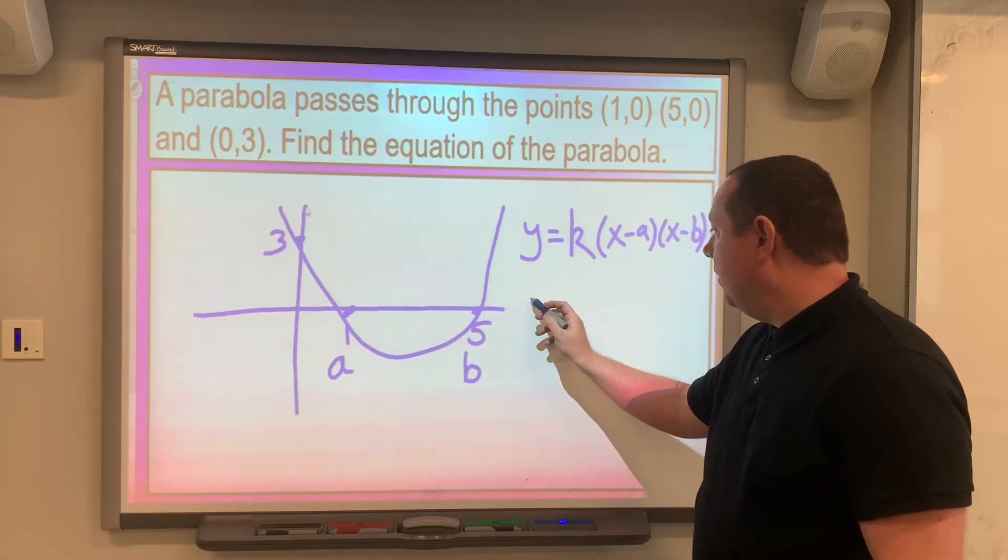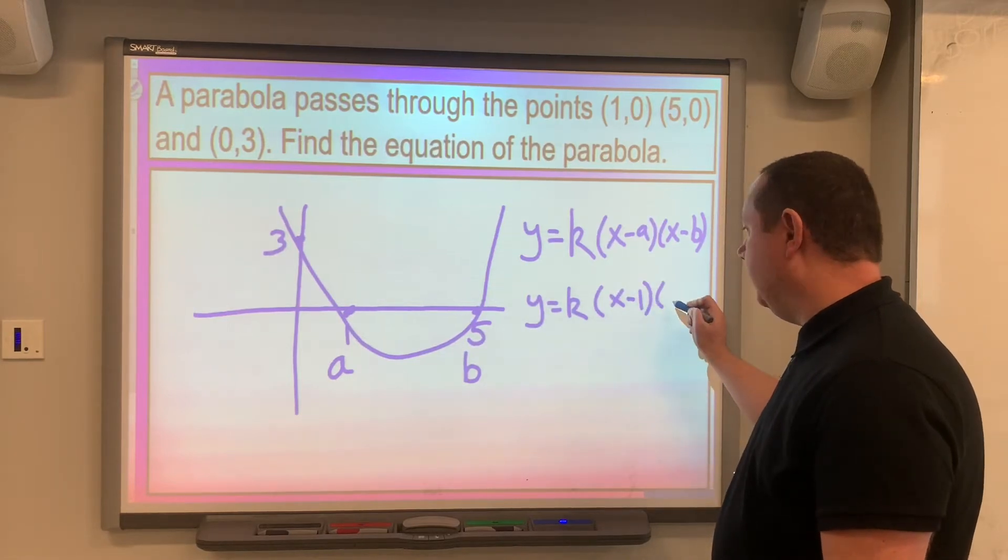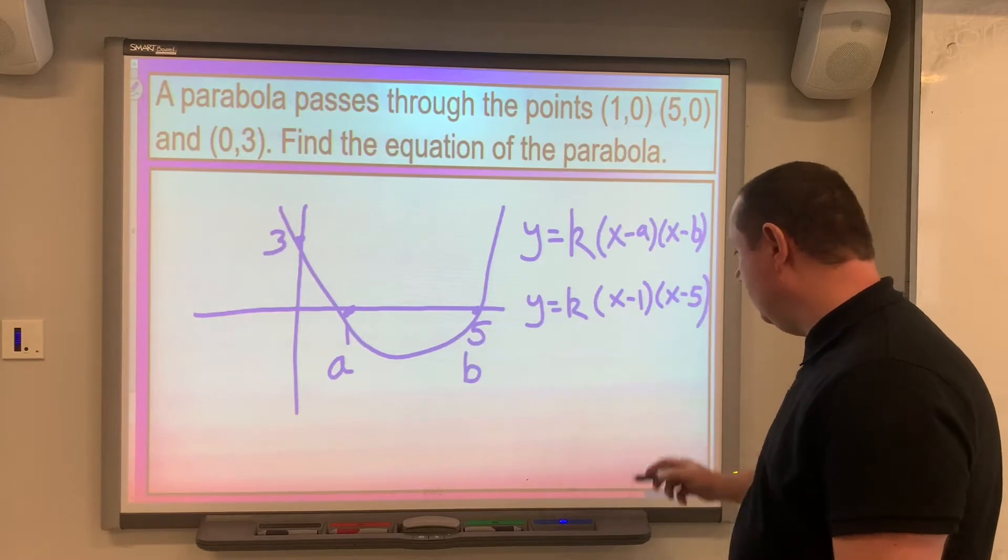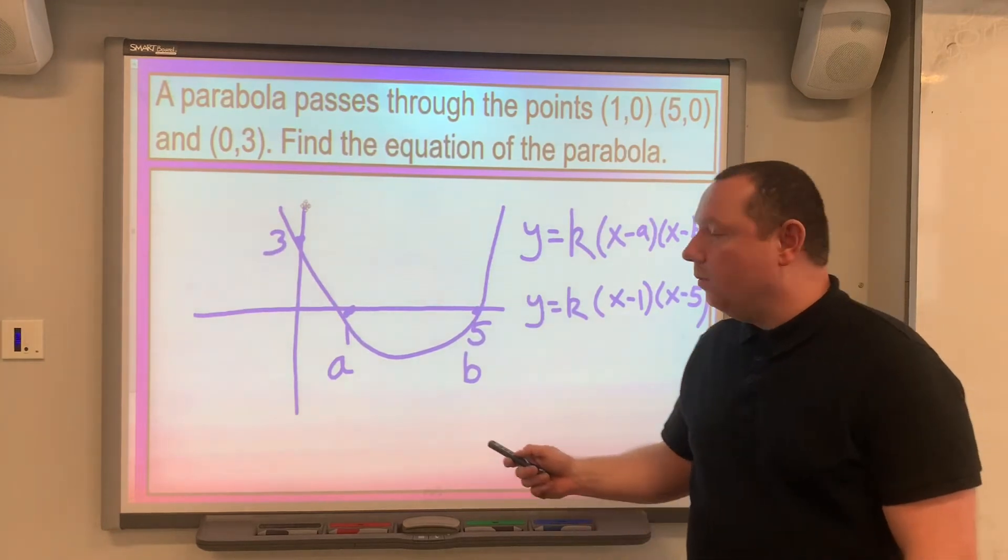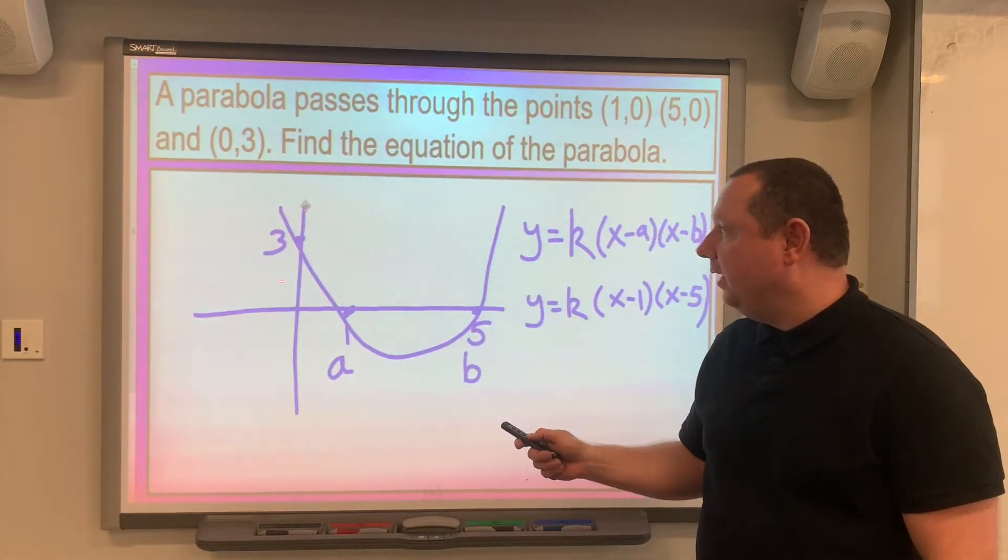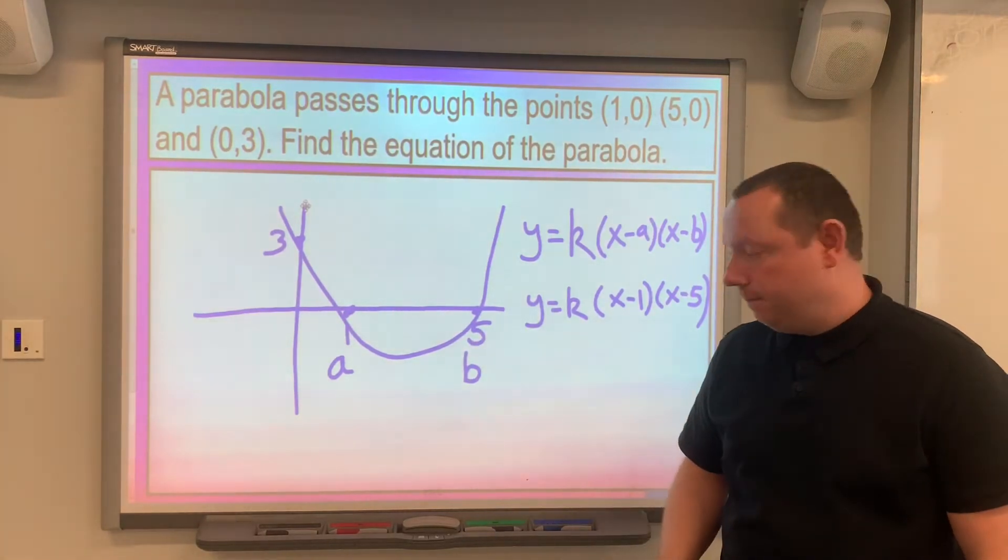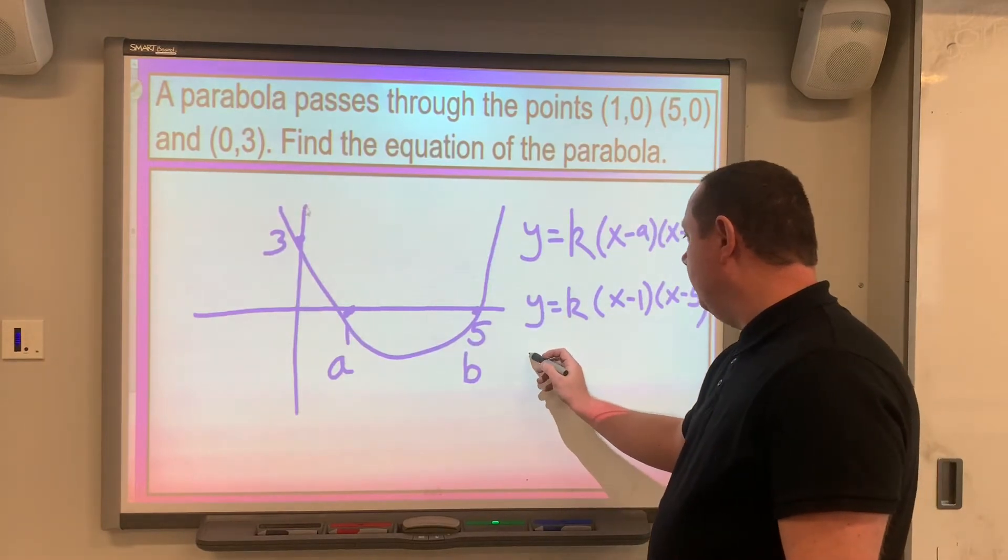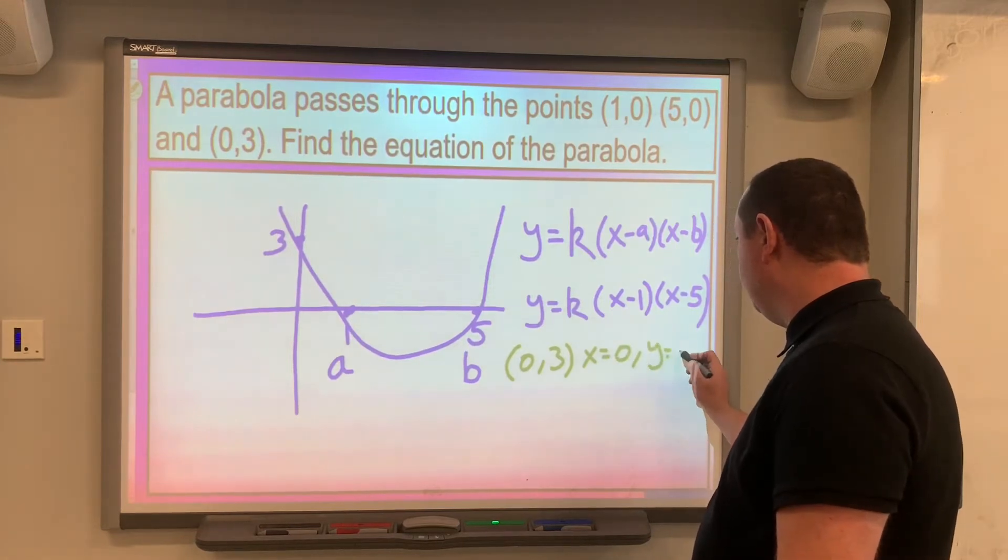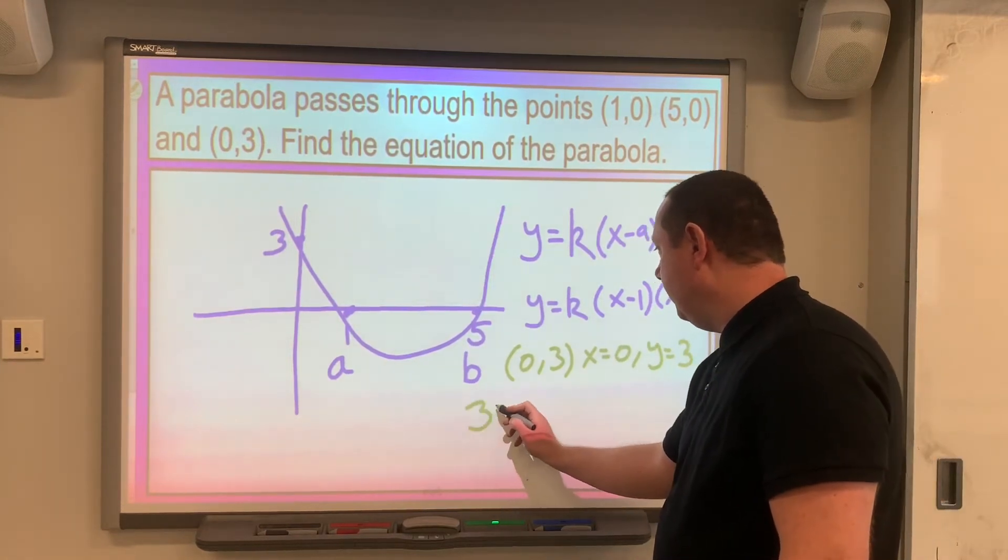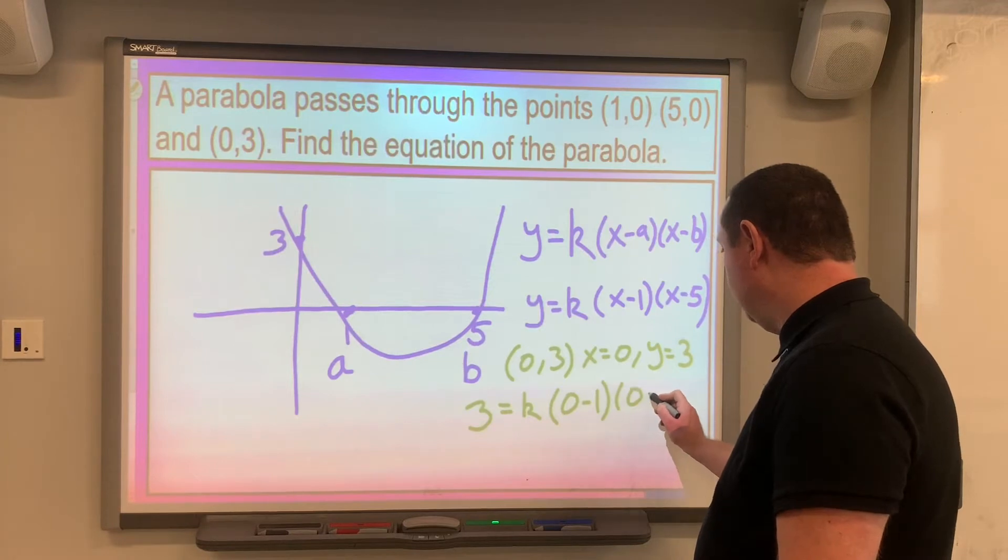So the equation of this parabola is y equals k times (x minus 1)(x minus 5). The problem is we don't know what k is. But we are given one other point in the graph, and that is the point (0,3). So if we substitute (0,3) into this equation, we will be able to work out k. In other words, x equals 0, y equals 3, we get 3 equals k times (0 minus 1)(0 minus 5).